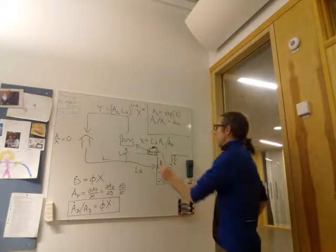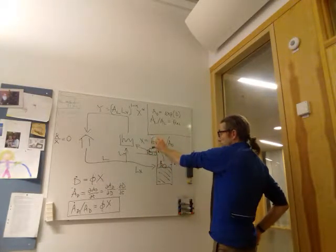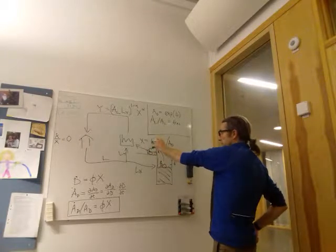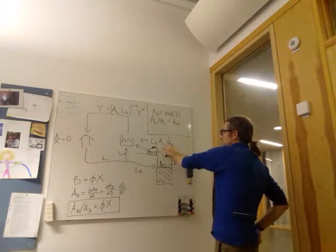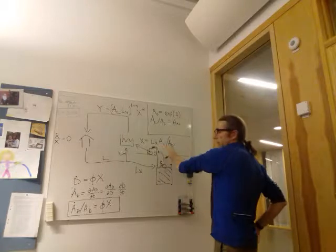So if x isn't changing and we're on a BGP so we're assuming that Lx isn't changing either, then these must be growing at equal rates.